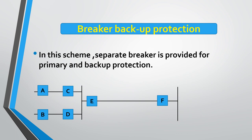In breaker backup protection, a separate breaker is provided for primary and backup protection. For example, if a bus bar is protected by circuit breakers C, D, and E, and any of these fails to operate, then circuit breaker A or B will give protection to that bus bar. This is how the bus bar gets protected by breaker backup protection.